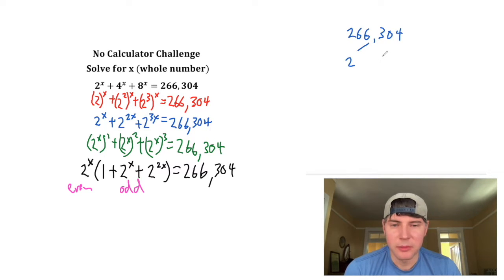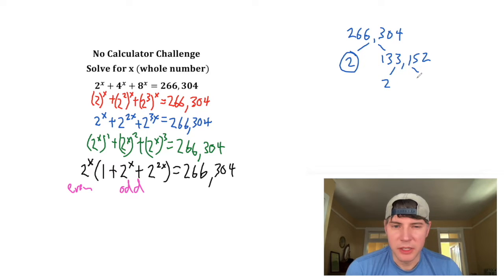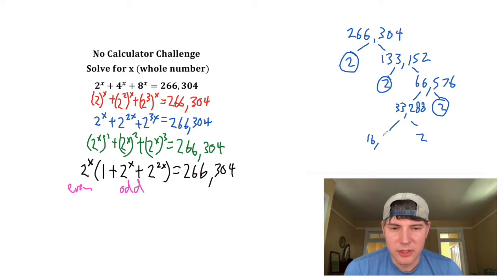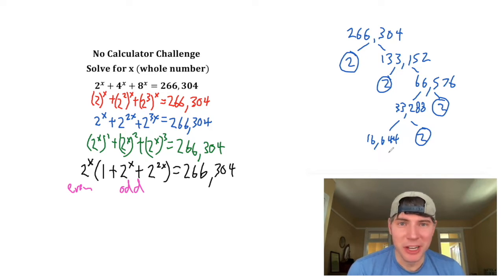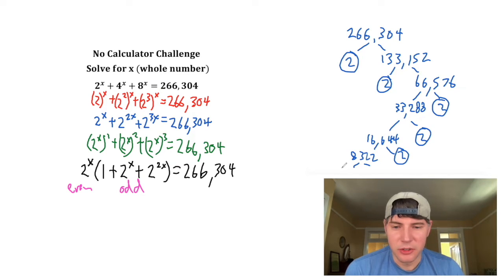So it'll be 2 times 133,152. That's prime. And then we'll divide it by 2 again, that'll be 66,576. Then divide by 2 again, that'd be 33,288. And then break it down again, that would be 16,644. Still even, so break it down again, 2 times 8,322, which is still even, so break it down into 2 times 4,161.